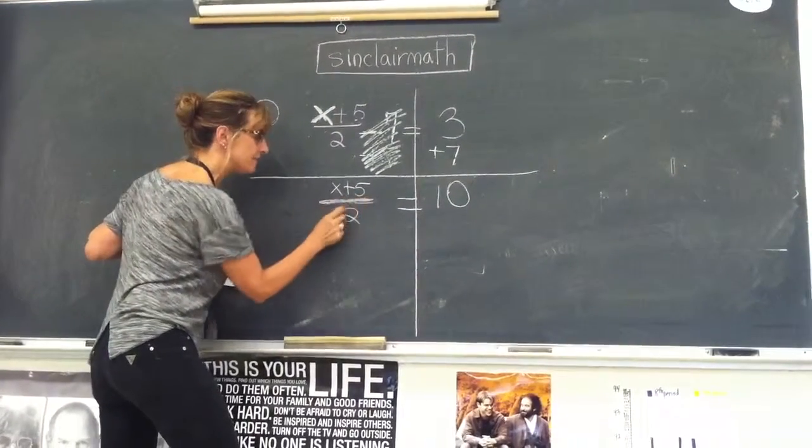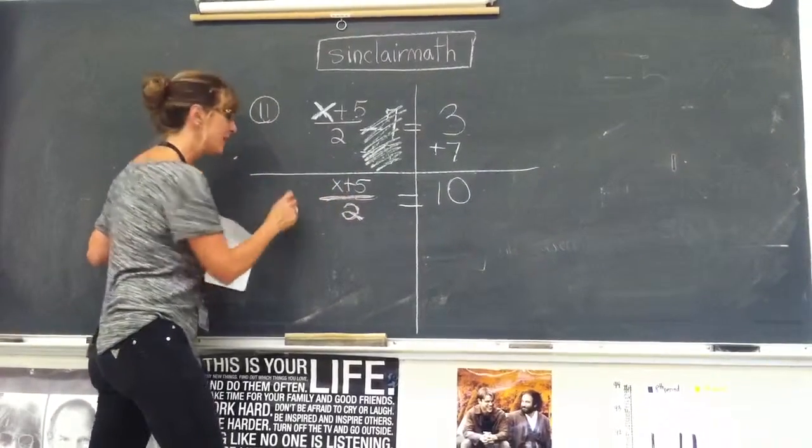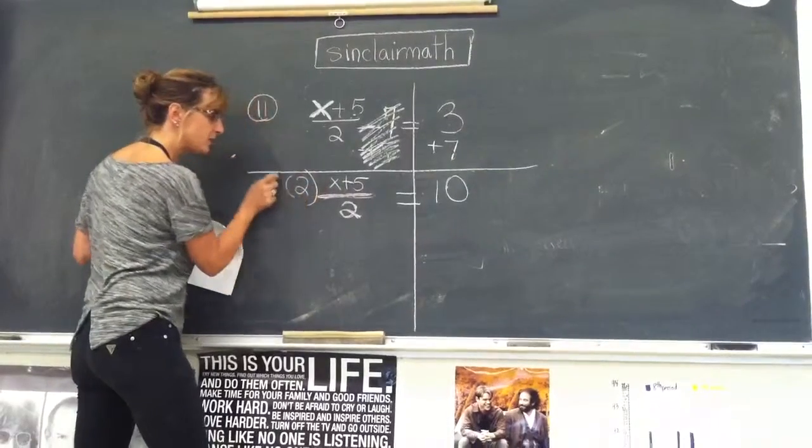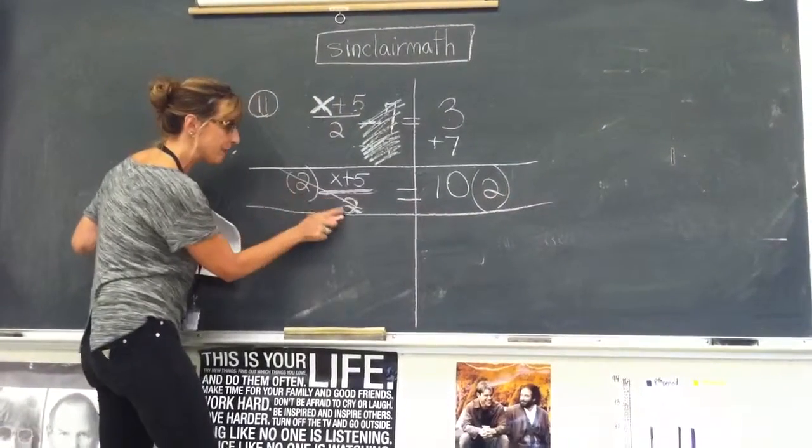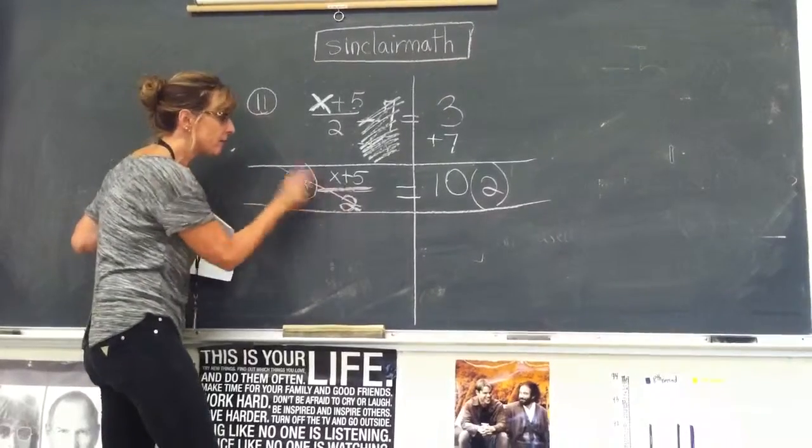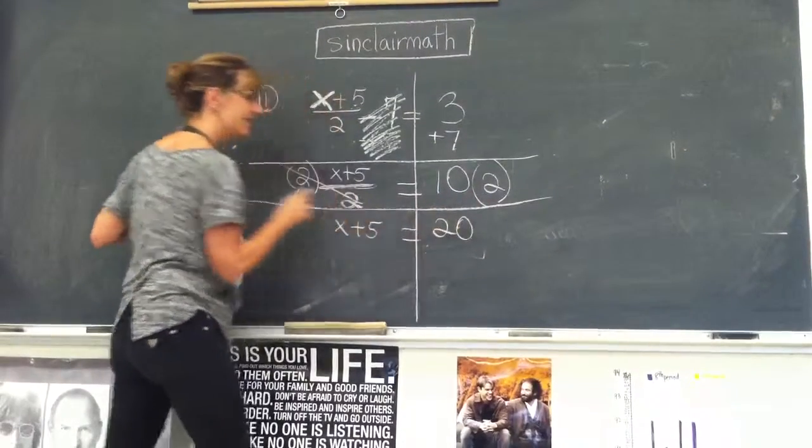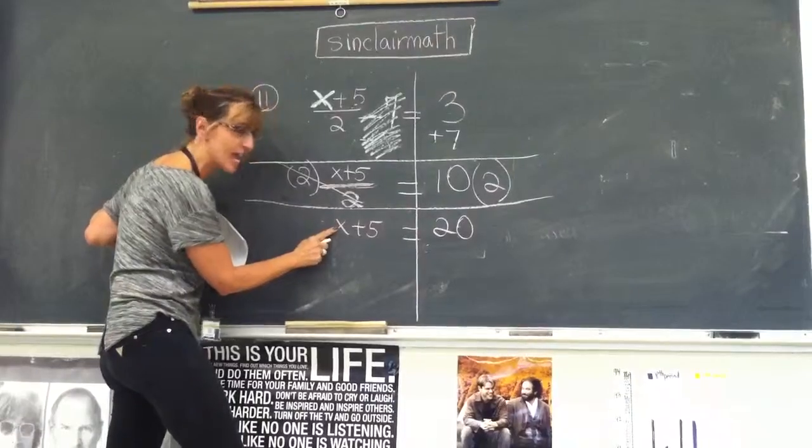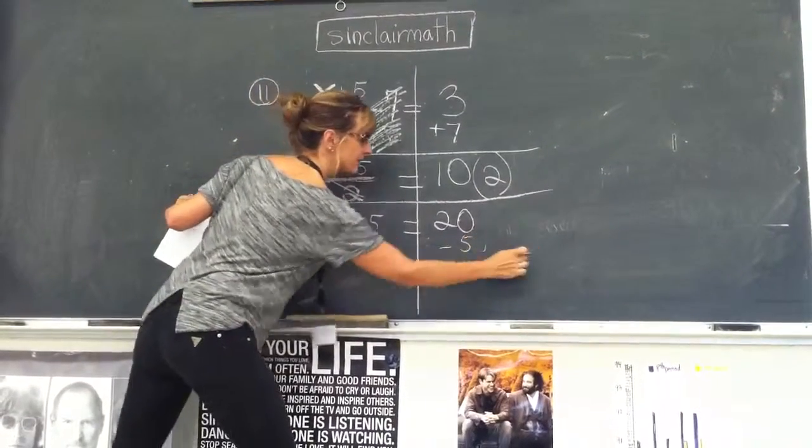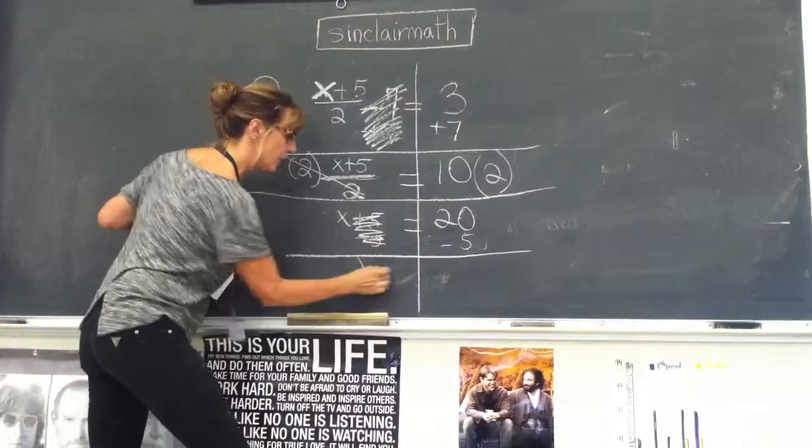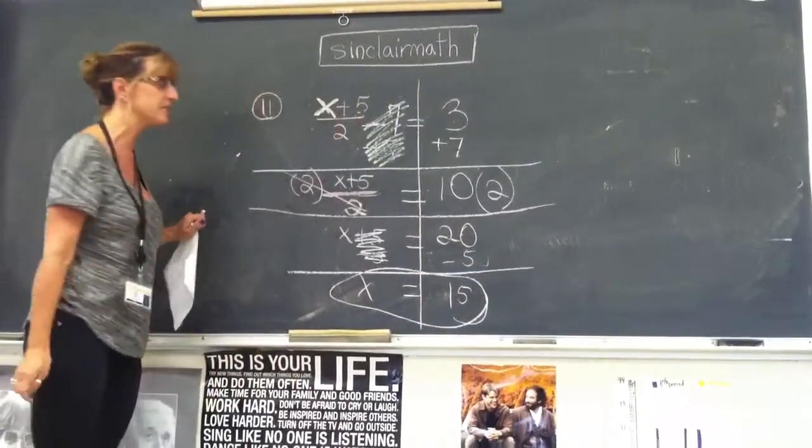Now I want to get rid of this division by 2. How do you undo division by 2? Multiply by 2. If I multiply by 2 on the left, I've got to multiply by 2 on the right-hand side of the equation. The multiply by 2 and divide by 2 cancels out, leaving me x + 5 equals 10 times 2 is 20. Now one more step. We don't have x alone yet. We still have that add 5. How do you get rid of adding? Subtract. And that leaves you with 20 take away 5 is 15. And there's your solution, x is 15. Perfect.